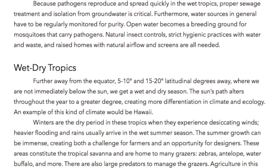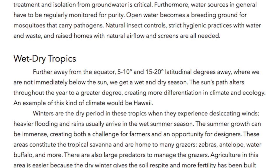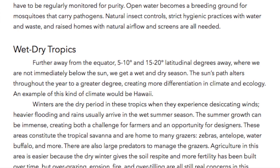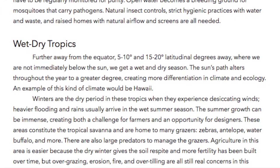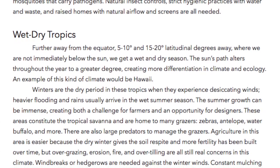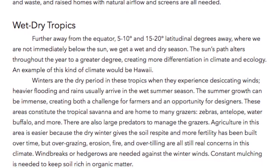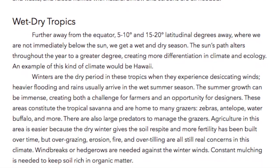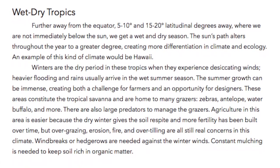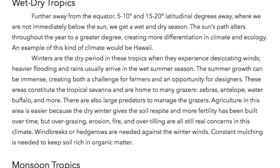Wet-Dry Tropics. Further away from the equator — 5 to 10 degrees, 15 to 20 latitudinal degrees away — where we are not immediately below the sun, we get a wet and dry season. The sun's path alters throughout the year to a greater degree, creating more differentiation in climate and ecology. An example of this kind of climate would be Hawaii. Winters are the dry period in these tropics, where they experience desiccating winds. Heavier flooding and rains usually arrive in the wet summer season. The summer growth can be immense, creating both a challenge for farmers and an opportunity for designers.